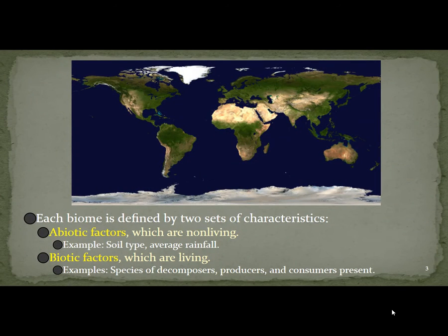Each biome is defined by two sets of characteristics. We have our abiotic factors — the non-living factors like soil and rainfall — and then biotic factors, which are living factors: species of decomposers, producers, and consumers. Just a review.